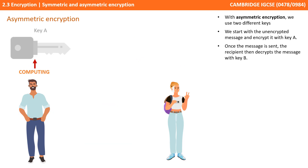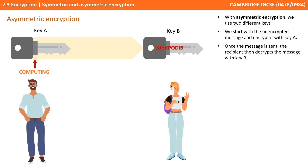With asymmetric encryption, we use two different keys. We start with the unencrypted message and encrypt it with the first key. Once the message is sent, the recipient then decrypts the message with a second key. The important thing to note is the key used by the sender to encrypt the message is not the same as the one the recipient uses to decrypt it. It's also virtually impossible to derive one key from the other, making asymmetric encryption a much more secure method.